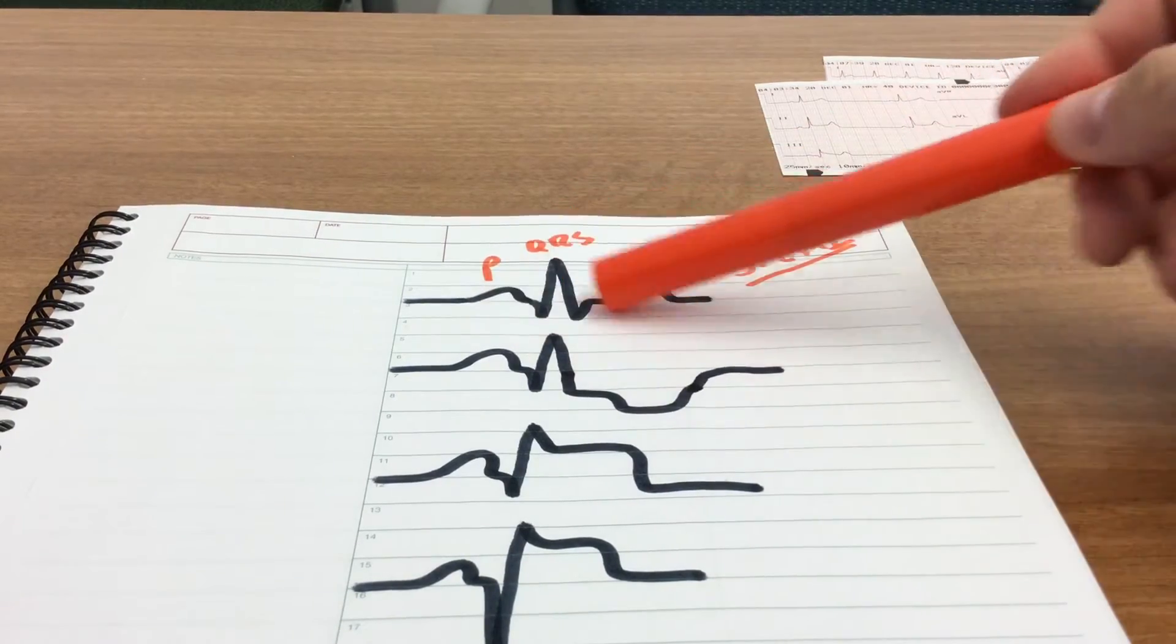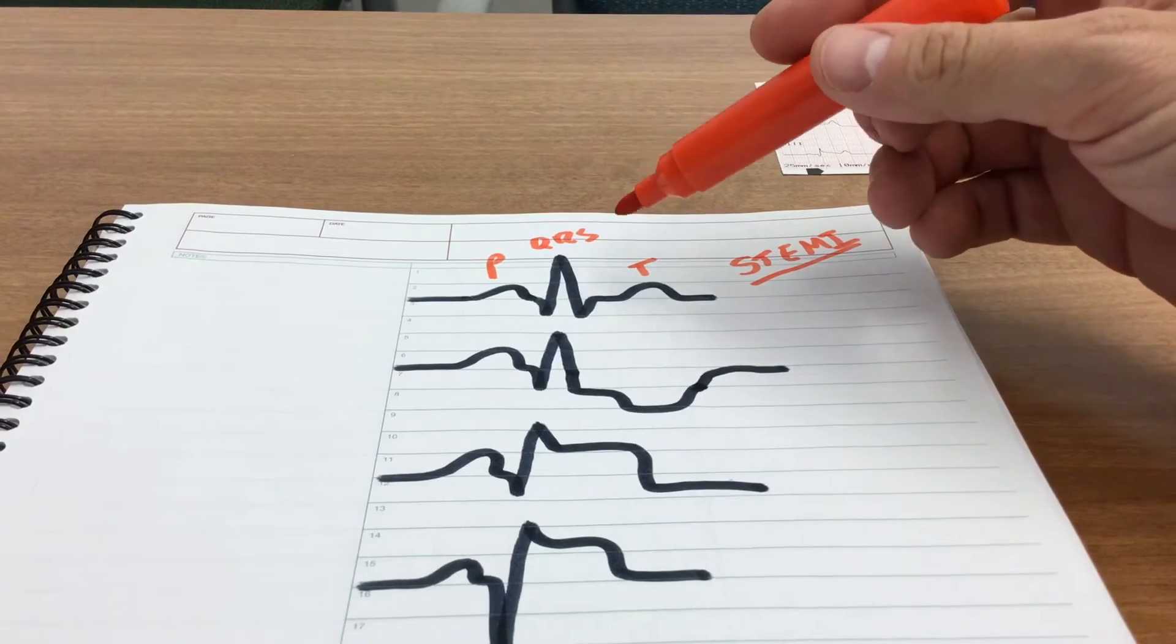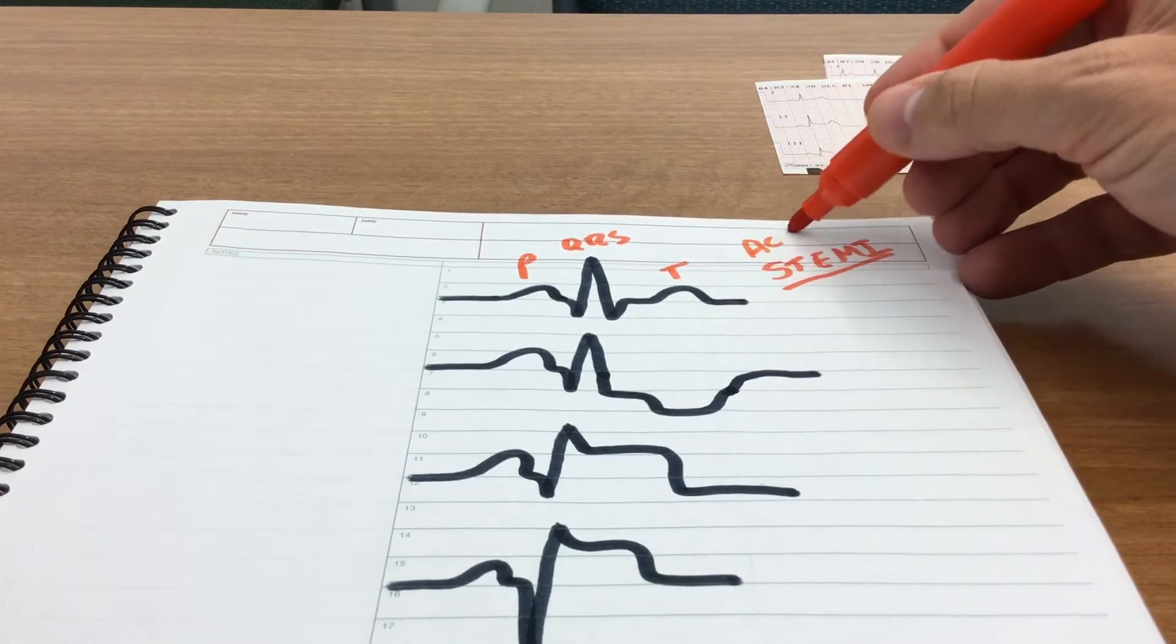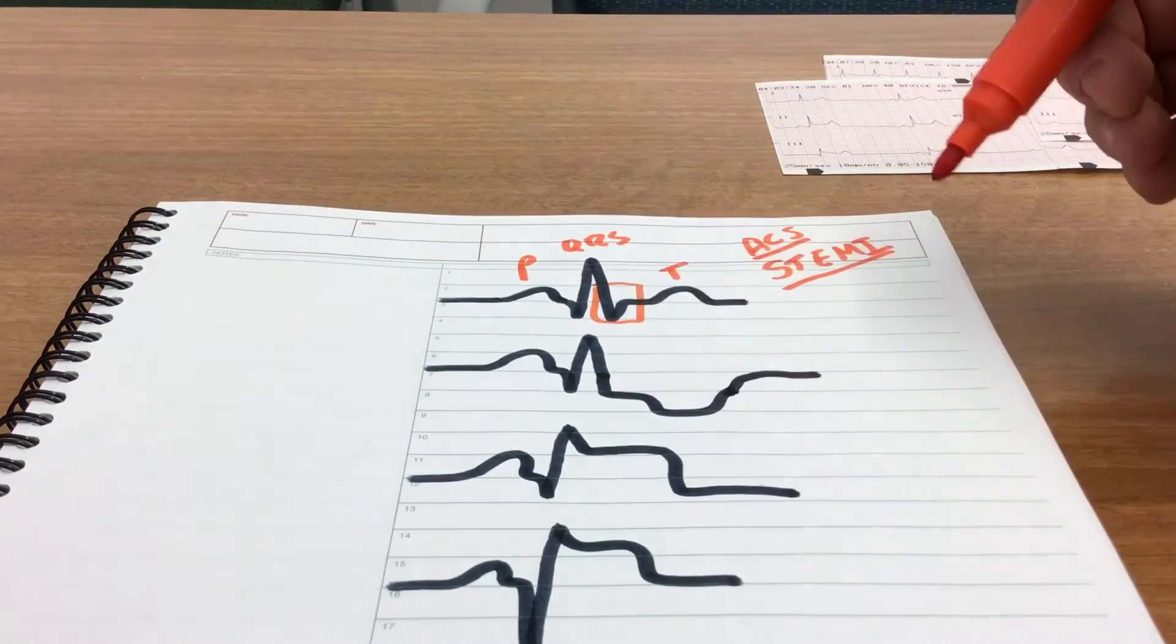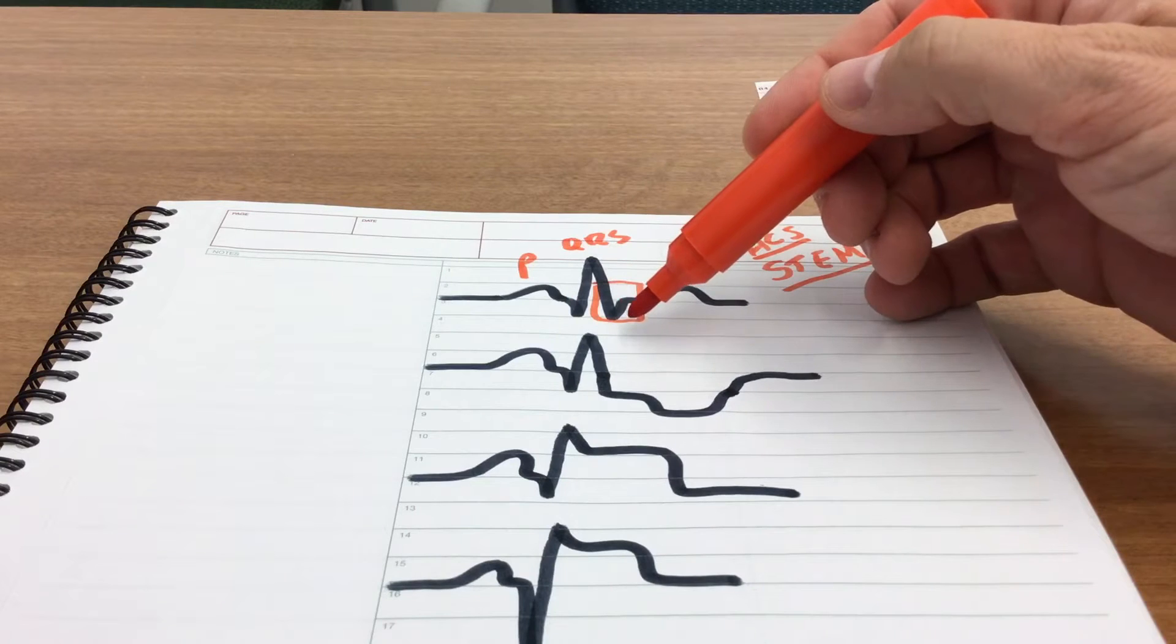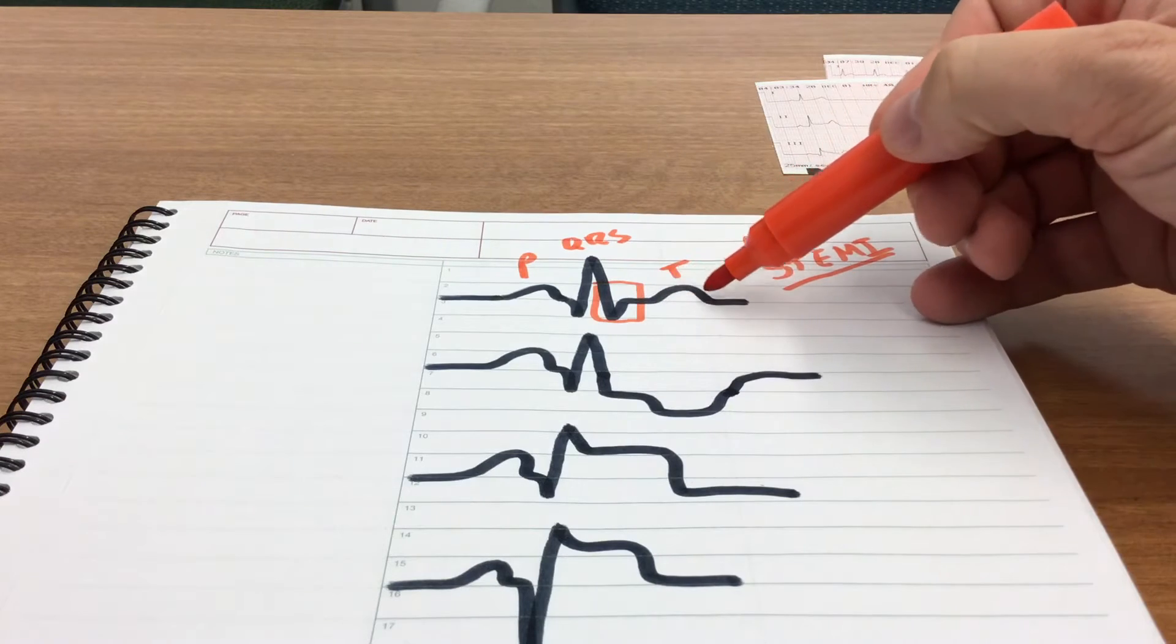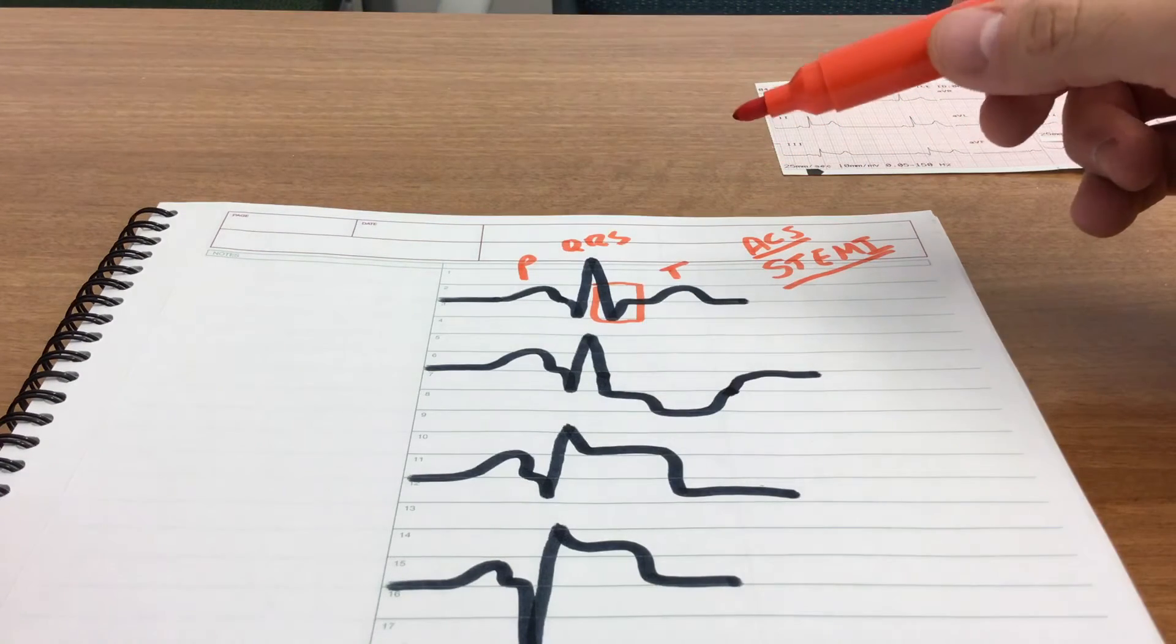So we have your normal PQRST complex, and the area that is of most importance or most concern to us when examining for evidence of an ACS or acute coronary syndrome is going to be this area right here, where your S wave comes back to baseline and then you go back to your isoelectric line, and then you have your T wave signifying ventricular repolarization.